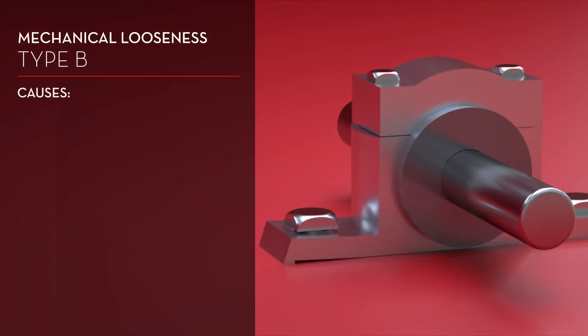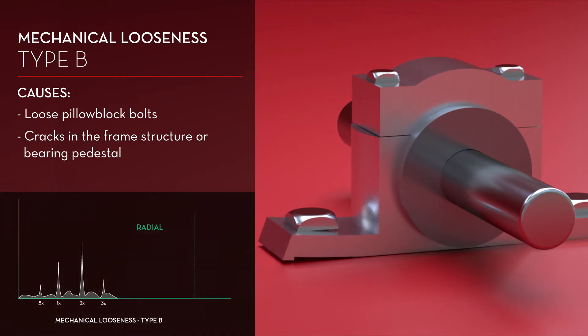Type B is generally caused by loose pillow block bolts, cracks in the frame structure, or bearing pedestal. Type B appears on the spectrum as two pulses per revolution with some floor noise.